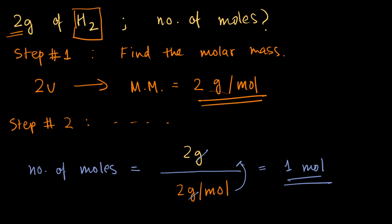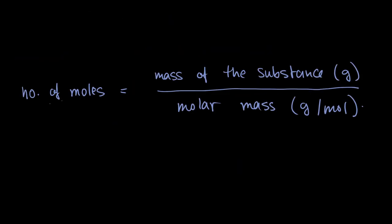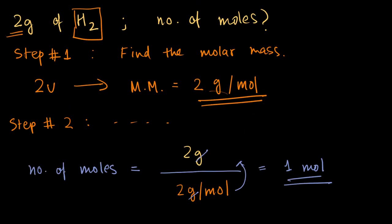This is the relation between moles, the mass, and molar mass. If you have any two of these parameters, you can find the other one. Suppose you're given the molar mass and the moles, you can also find the mass. And if you're given the mass and the molar mass, you can find the moles, just like we did right now.